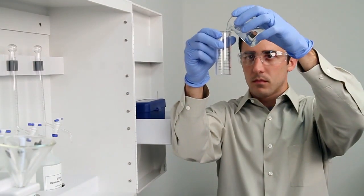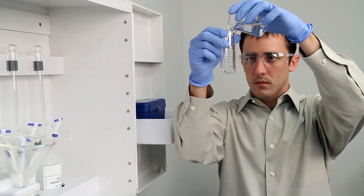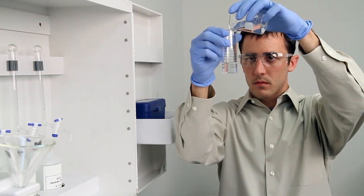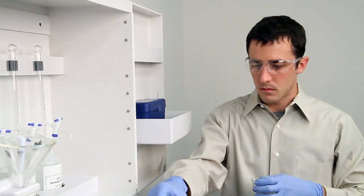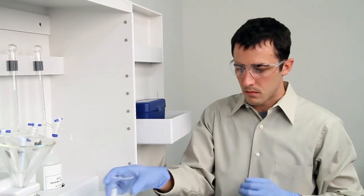To get an accurate sample, hold the vial close to eye level. Accuracy is very important during this step. Once you feel you have an accurate sample, place the vial on a level surface and bend down to eye level to verify.